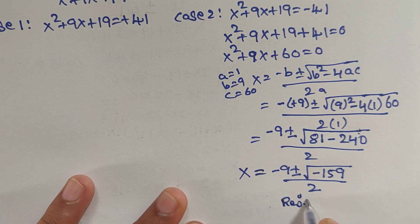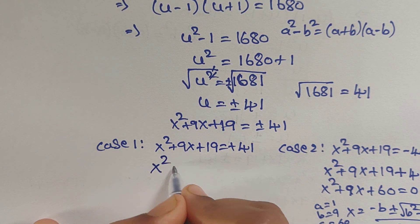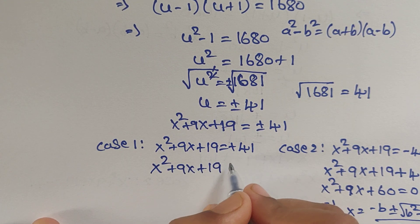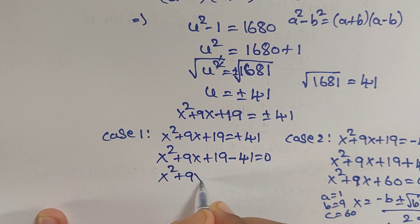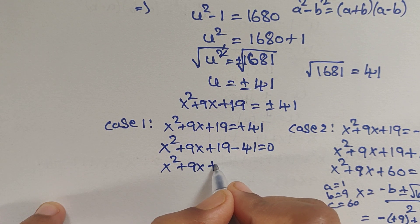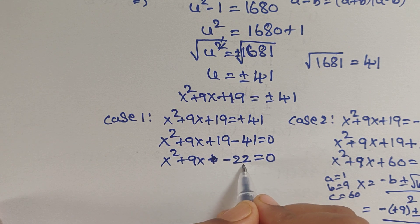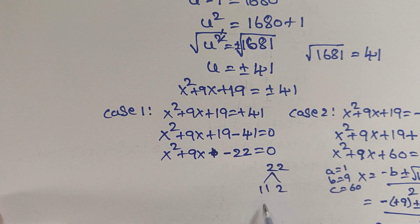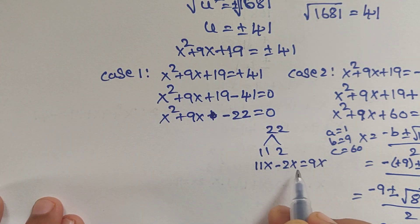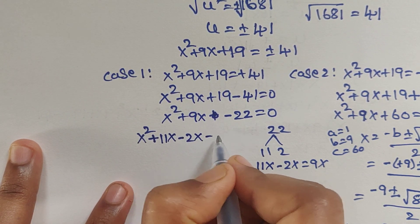For Case 1: x²+9x+19 = 41, which gives x²+9x−22 = 0. Factoring: we need two numbers whose product is 22 and difference is 9, which are 11 and 2. So we write x²+11x−2x−22 = 0, giving x(x+11) − 2(x+11) = 0, so (x−2)(x+11) = 0.